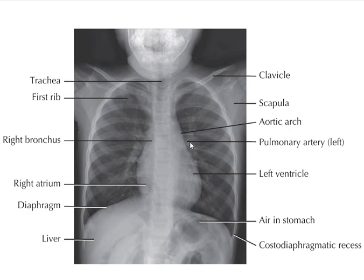Here is the pulmonary artery. This is the left ventricle, which forms the anterior surface of the heart. This is the right atrium. Here is air in the stomach, this is the liver, and this is the diaphragm.